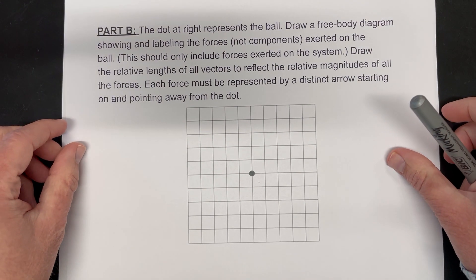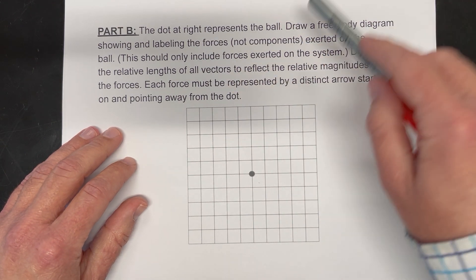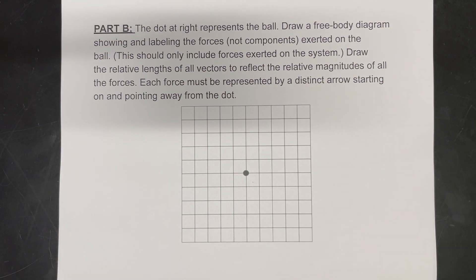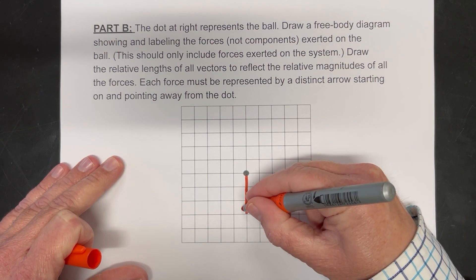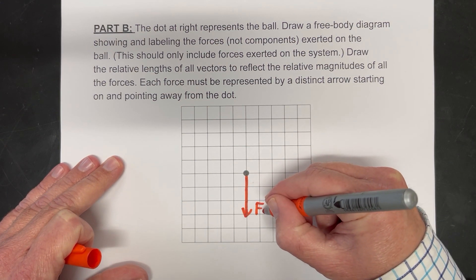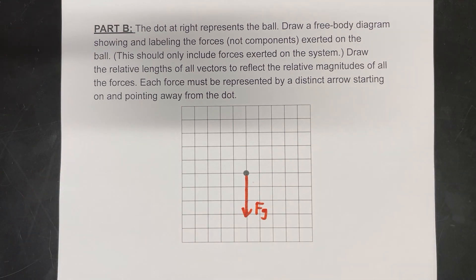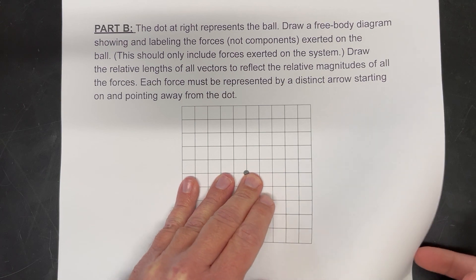So next part says the dot below represents the ball. Draw a free body diagram. Make sure the lengths of the arrows represent the forces. Well, that doesn't even really matter because we only have one force here. There's no air resistance on this. So we just have the force of gravity acting down on this ball here.